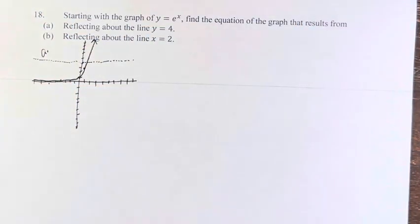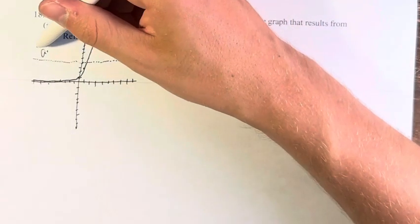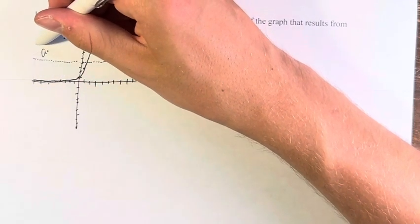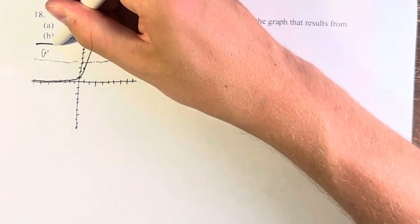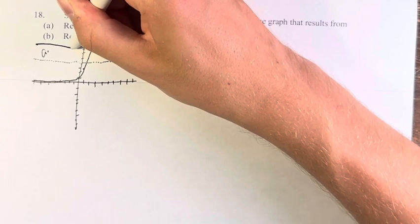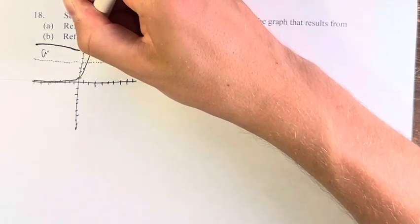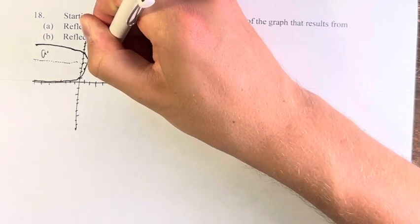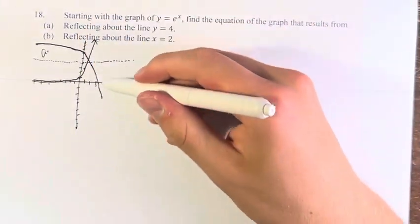Well, the first thing we have to do is draw what it would look like if it was reflected. So it would look something like this, where we start 4 units away, so we're going to go 4 units up. And then as we approach 0, it comes in, and it crosses, and it goes off to negative infinity.